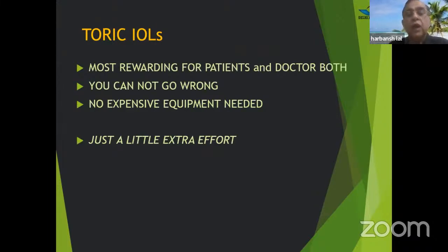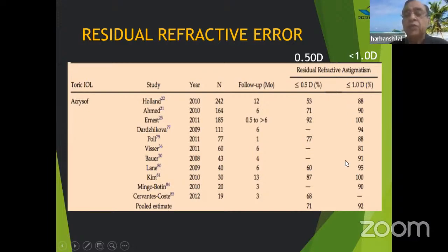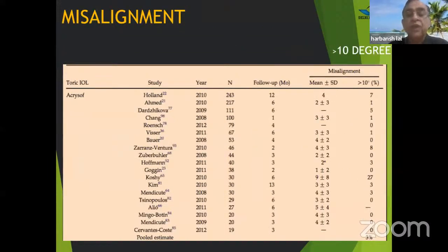This is most rewarding for both patient and doctor. You can do no harm and need no expensive equipment — just a little extra effort. These IOLs actually work: over 60–70% of patients will have residual refractive error less than 0.5 diopter, and 80–90% will have below one diopter in all studies. Misalignment is usually two to four degrees; only 2–3% of patients will have beyond ten degrees of misalignment, which would be significant.